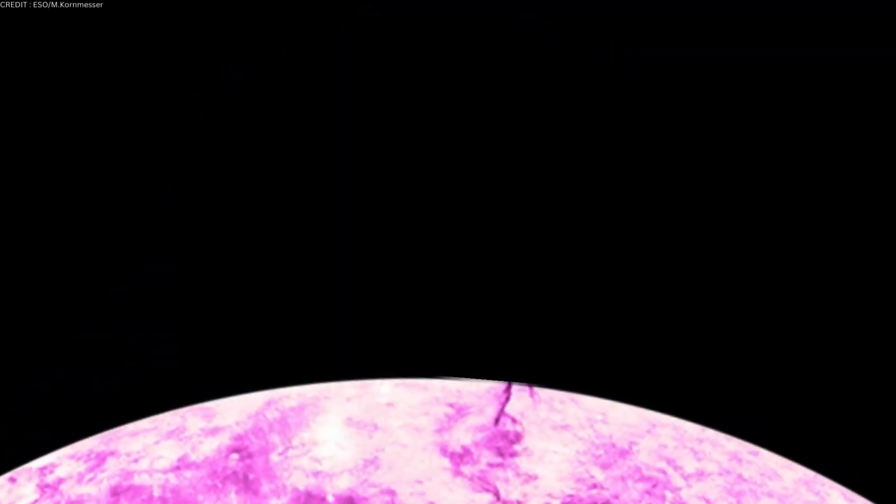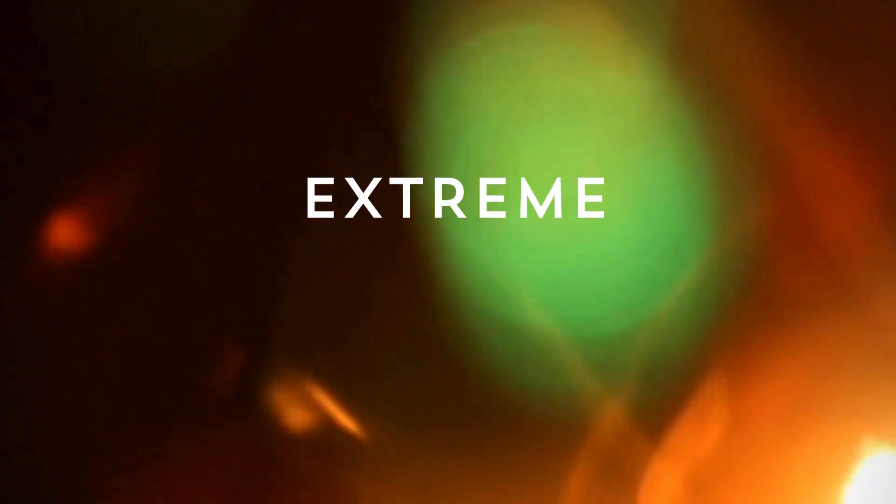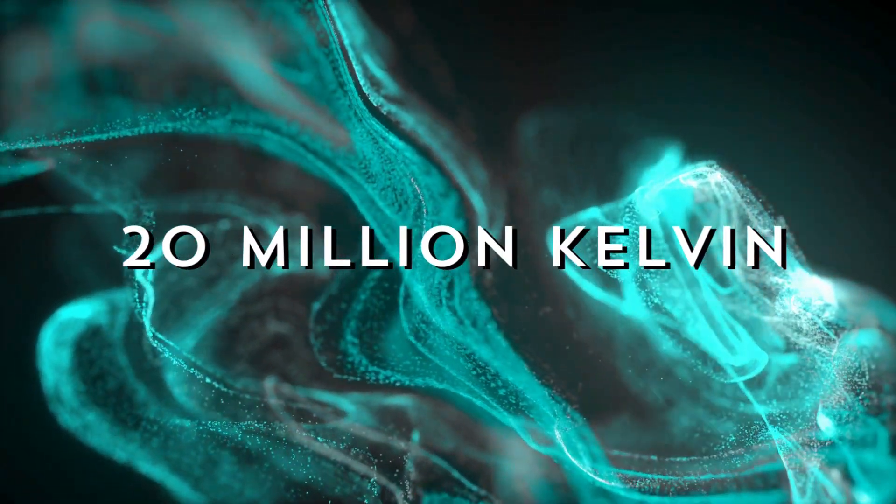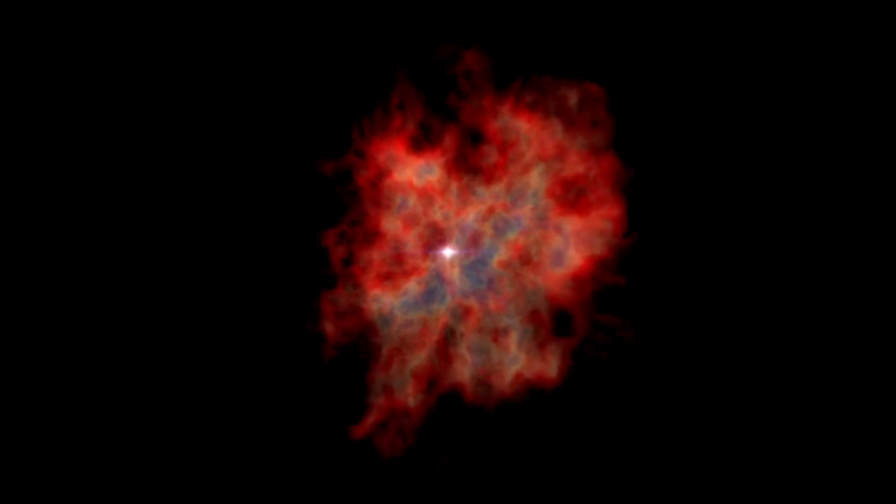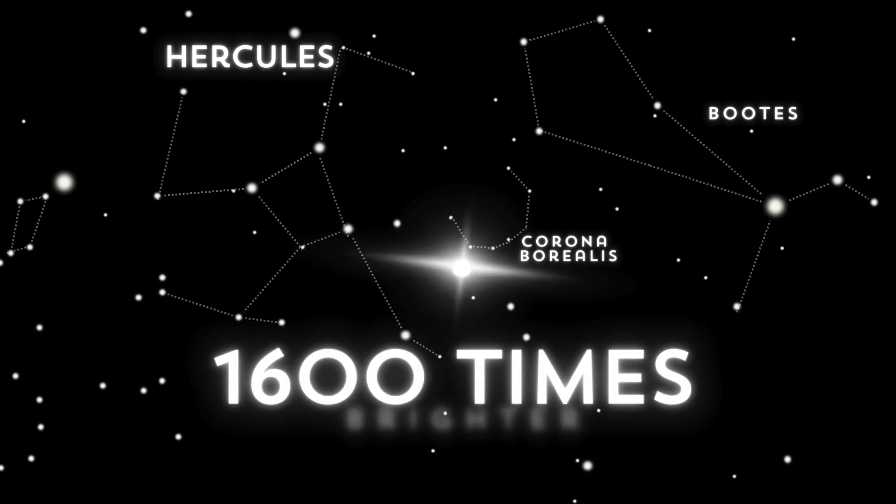When enough hydrogen accumulates on the white dwarf's surface, it heats up, reaching extreme pressure and temperature. When the temperature hits about 20 million Kelvin, it ignites a runaway fusion reaction, releasing an immense amount of energy, causing a nova explosion. The star suddenly brightens, shining up to 1,600 times brighter.